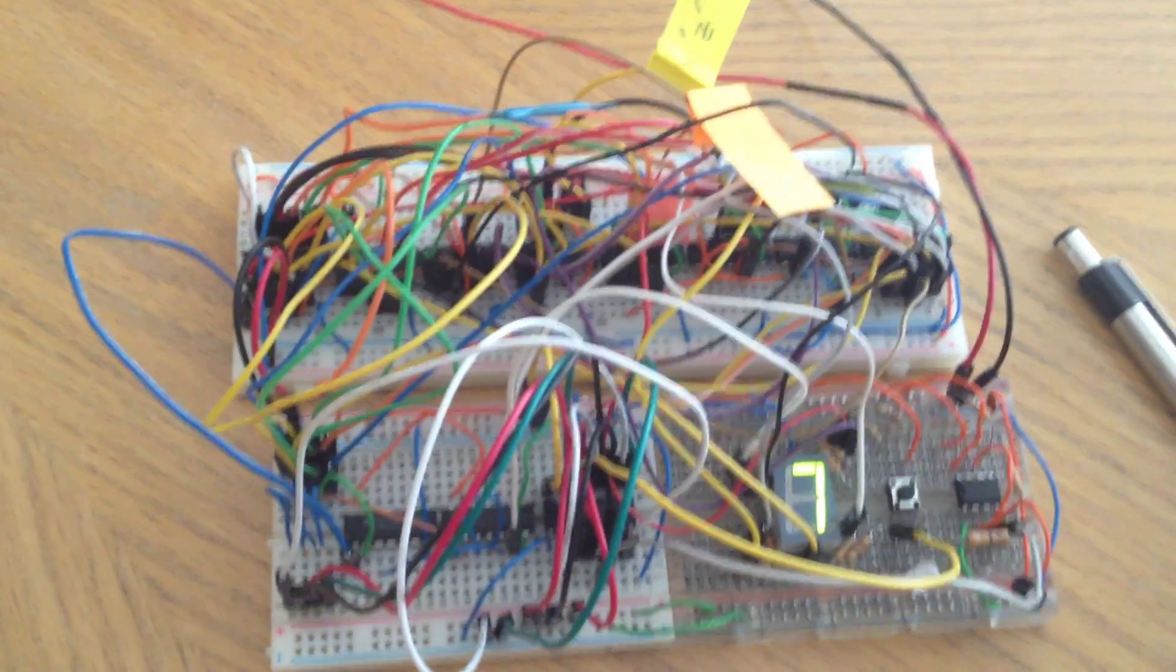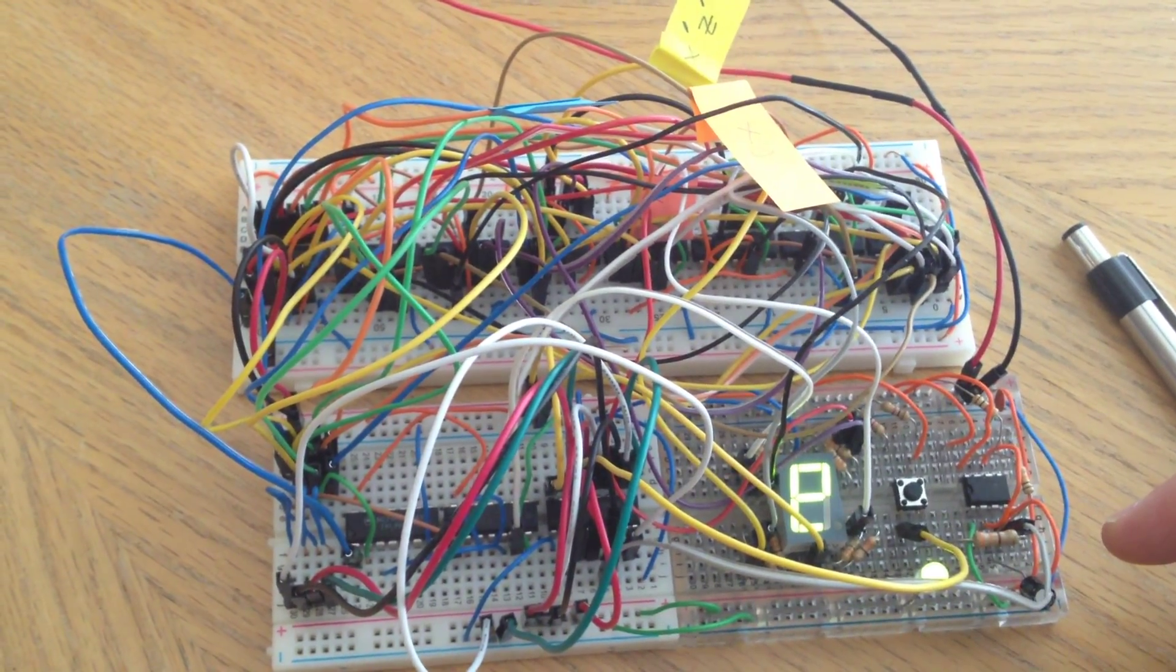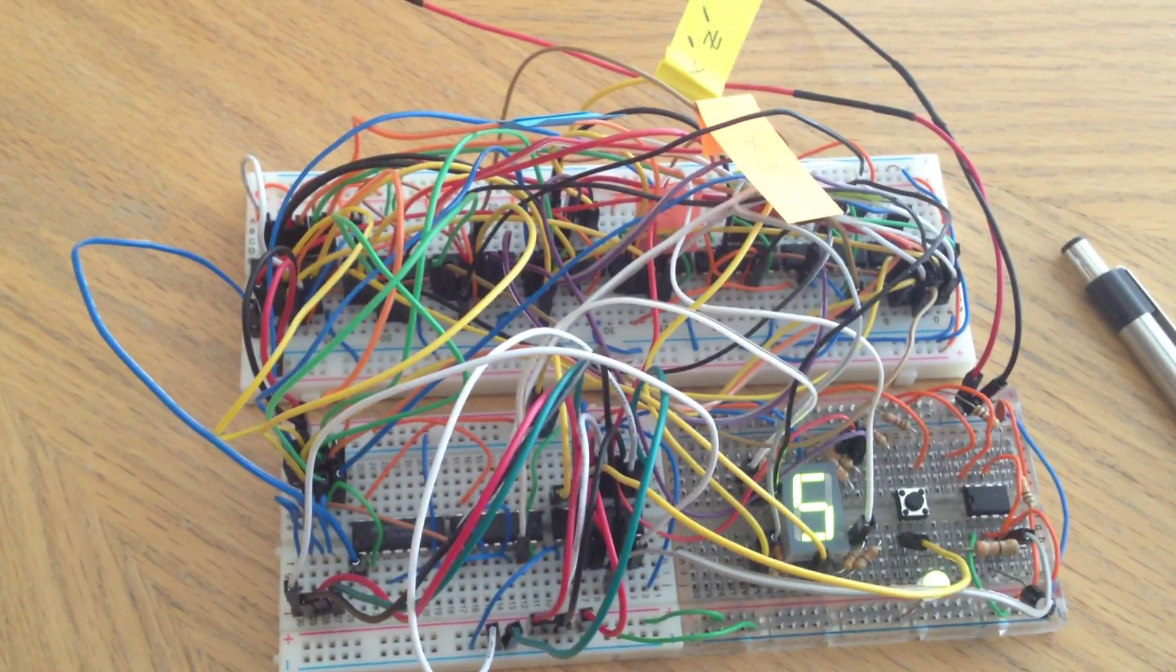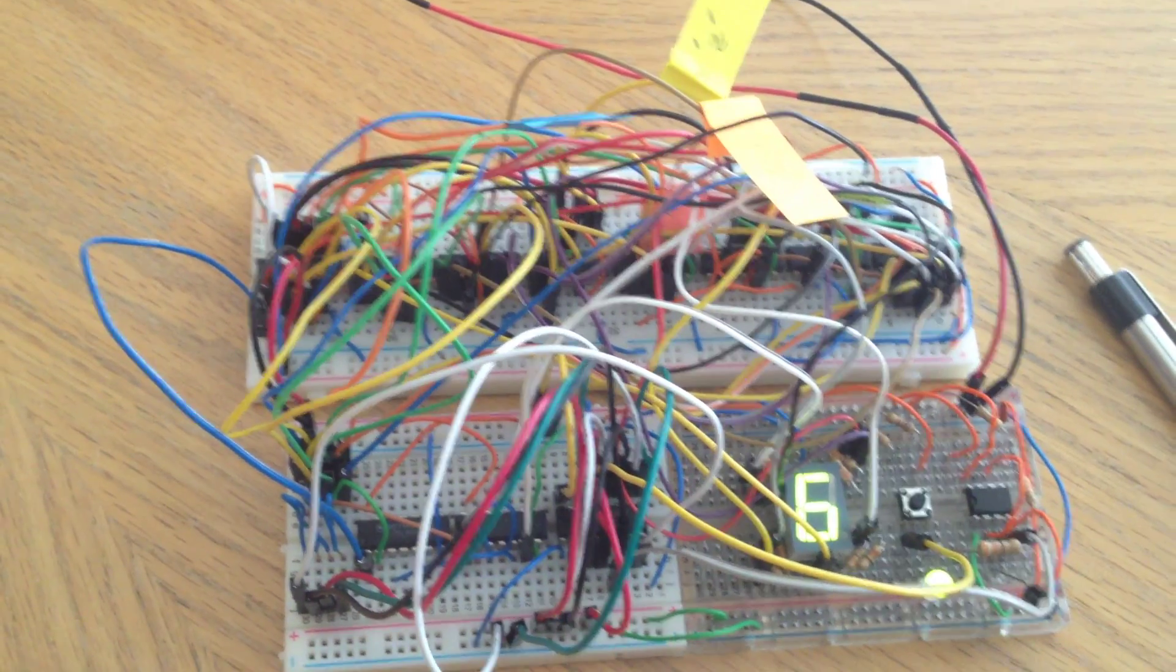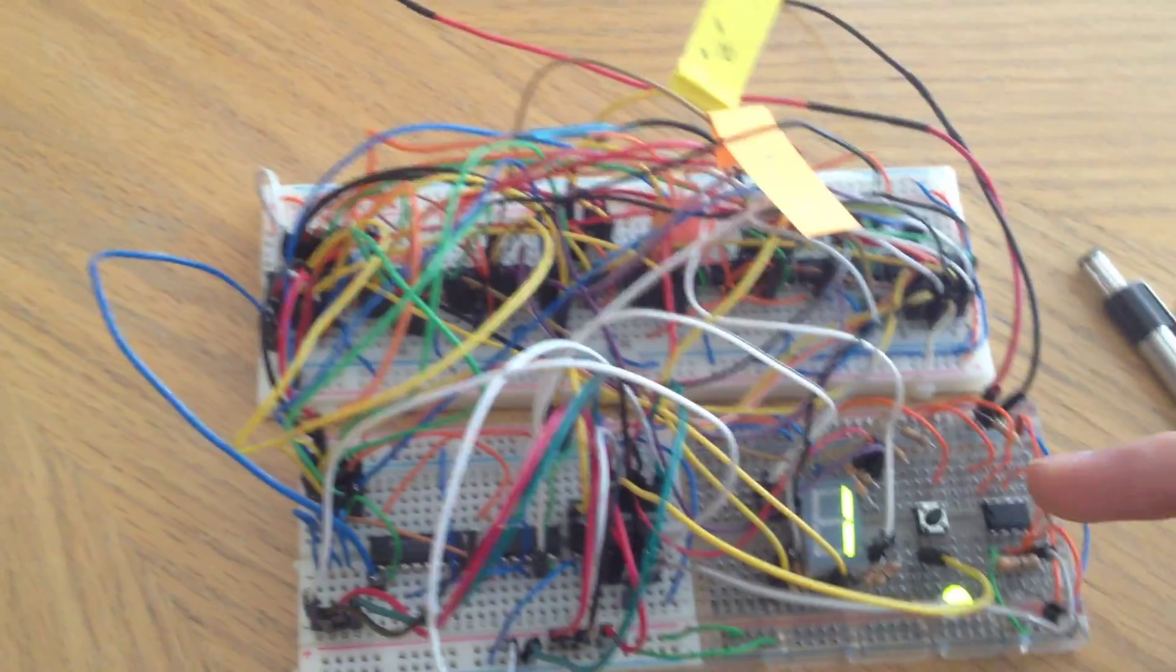And notice once it gets past nine, it goes into this weird character. It goes into this strange sequence of numbers. But it will eventually start over at zero again. I haven't figured out how to feed the output back into the counter so that it will reset itself. There's got to be some way to do that.